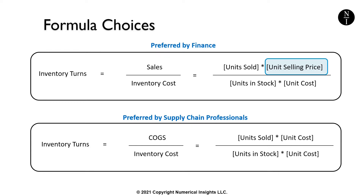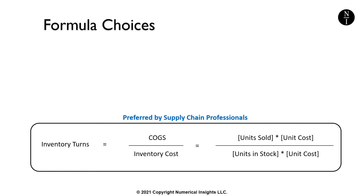Since supply chain professionals use this metric to measure how well they manage inventory, their interest lies in the speed at which product is shipped out to customers. That means their focus is on unit quantities and not selling price. My focus is on helping clients with inventory and operational analytics, so I'm going to use the second formula for the rest of this video.